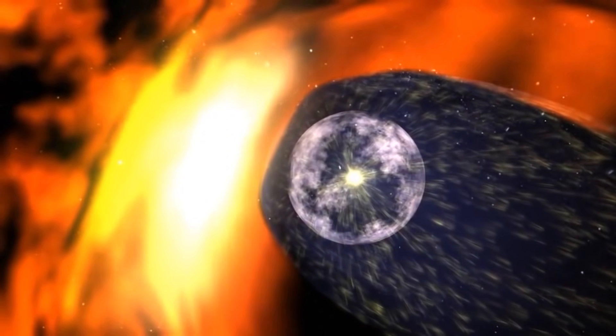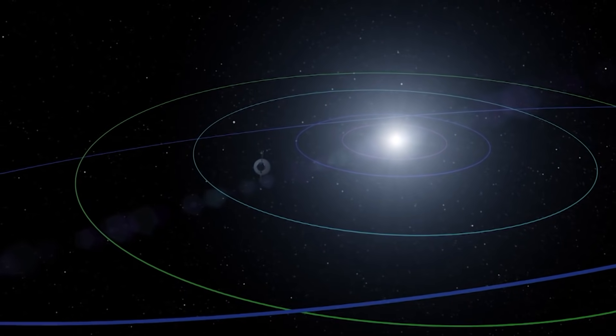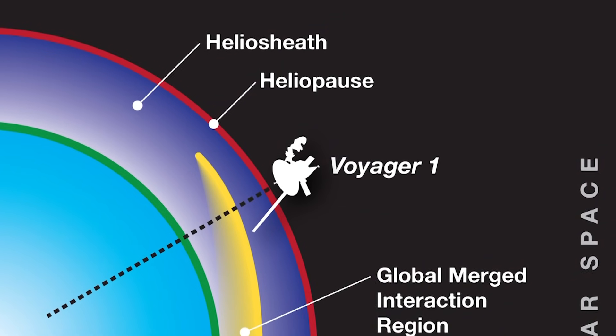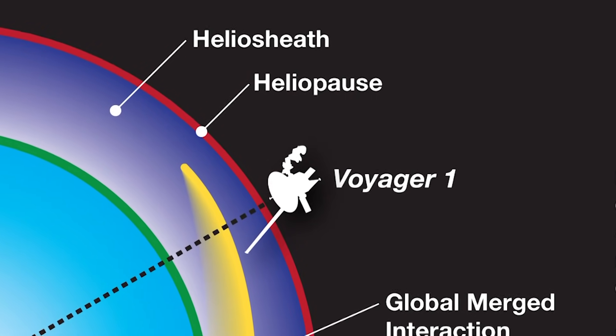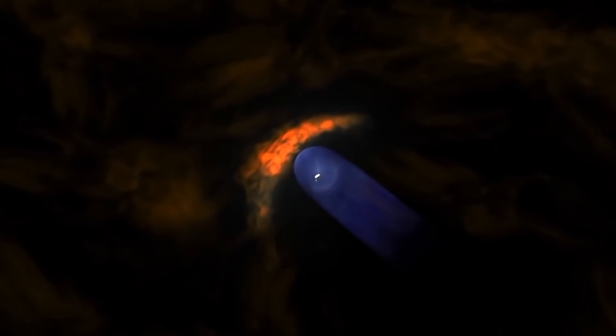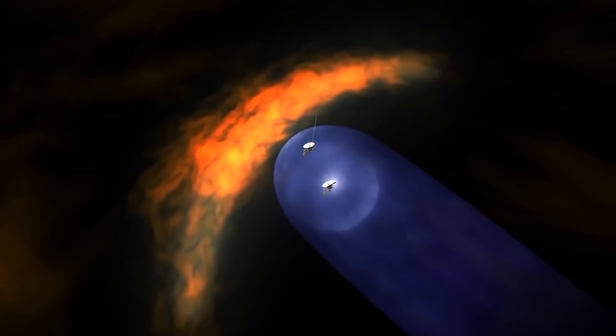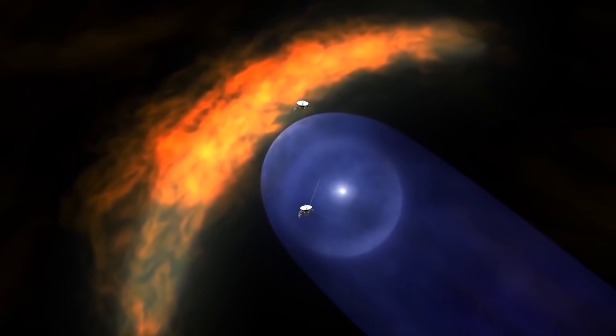The surprise was that the heliopause has a heterogeneous structure in various areas of the heliosphere and of varying thickness. This was explained thanks to Voyager 1 crossing the heliopause in the northern hemisphere of the heliosphere and Voyager 2 in the southern hemisphere.